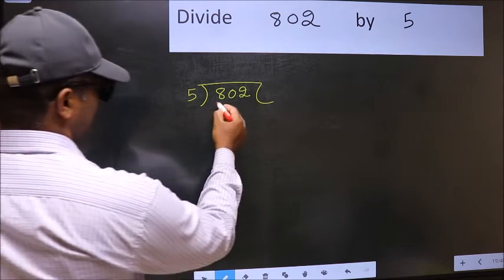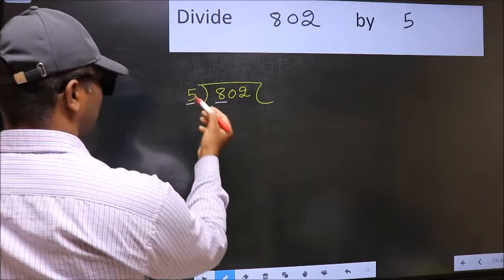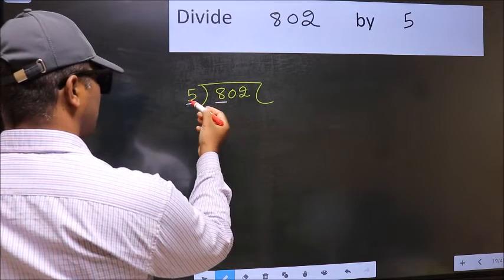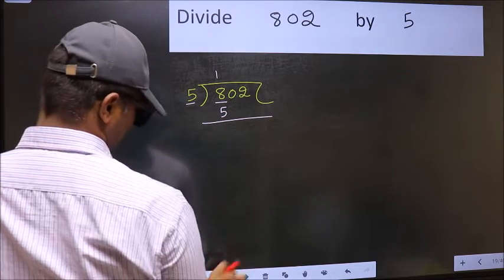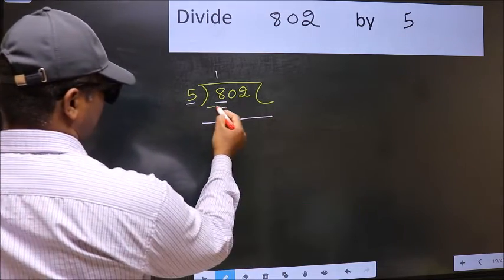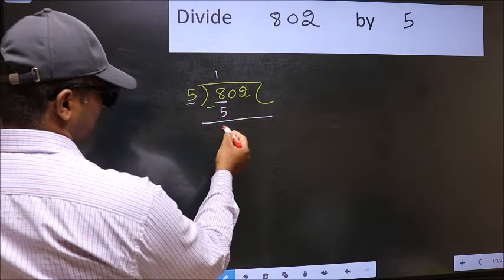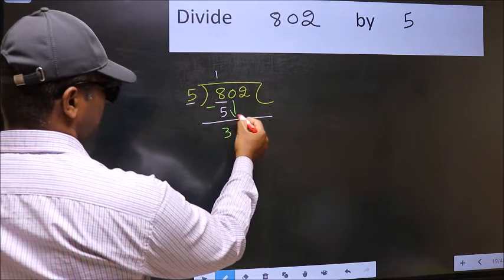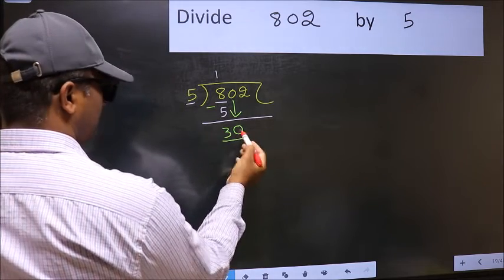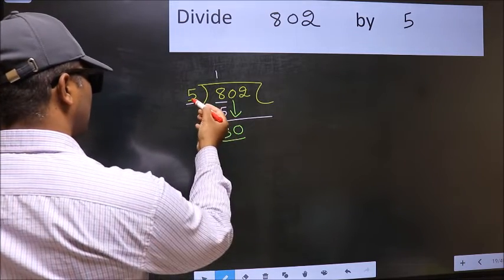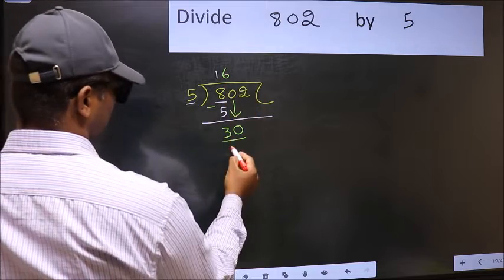Now next, here we have 8 and here 5. A number close to 8 in 5 table is 5 once 5. Now you should subtract. 8 minus 5, 3. After this, bring down the beside number. So 0 down. Now 30. When do we get 30 in 5 table? 5, 6, 30.